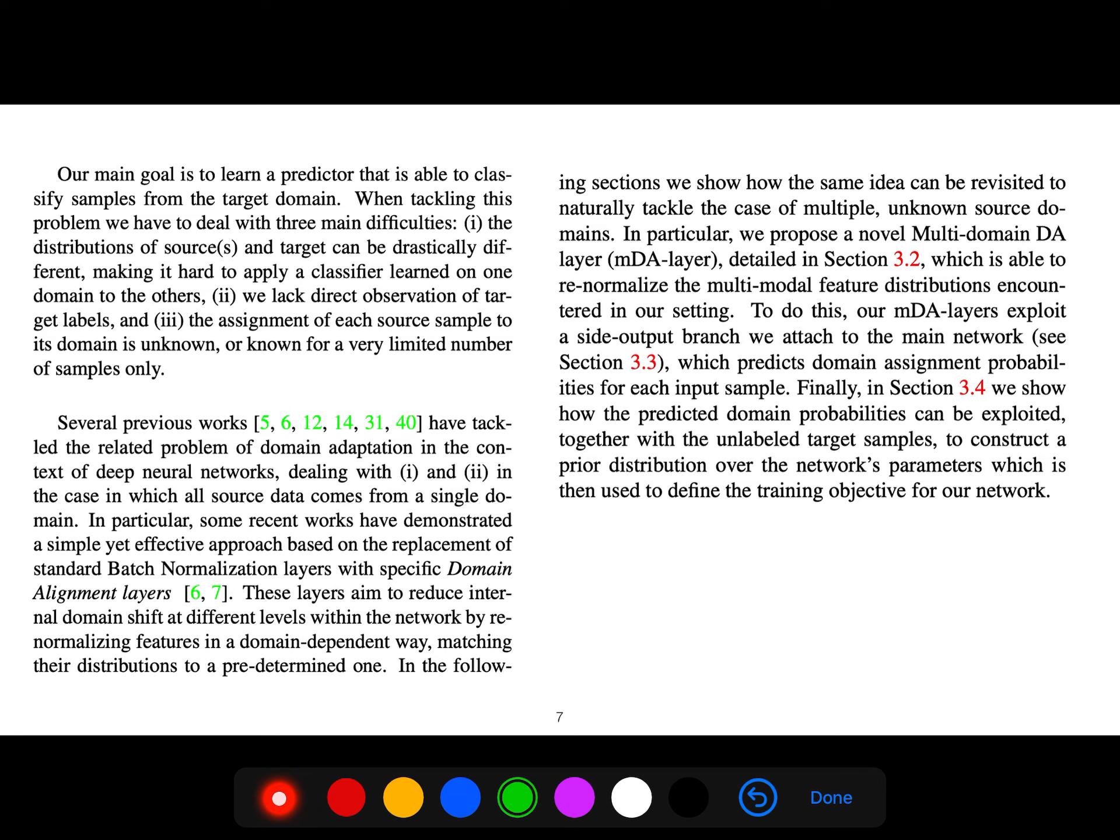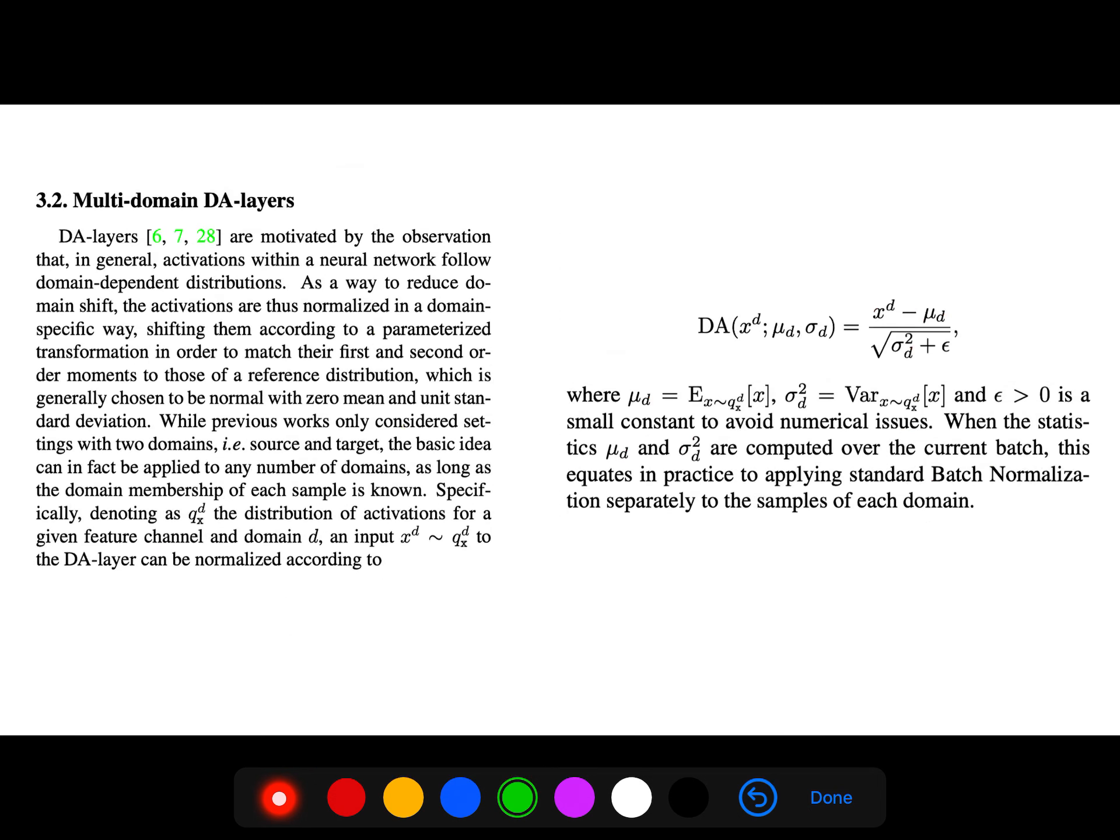So our goal is to learn a predictor that is able to classify samples from the target domain. We have three difficulties: the distributions of sources and target can be drastically different, we lack direct observation of target labels, and finally the assignment of each source to its domain is unknown.